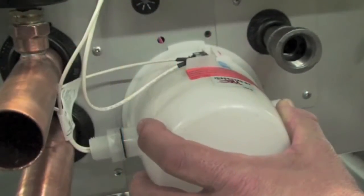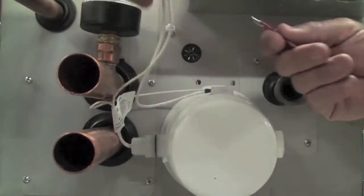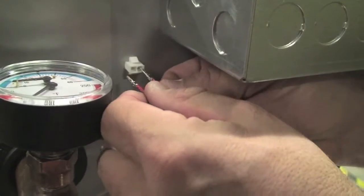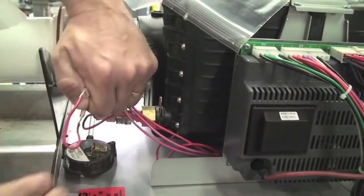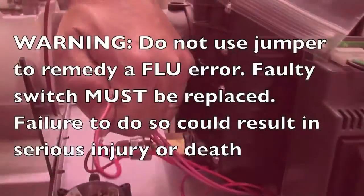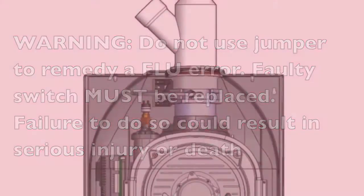Correct any problem found and resume operation. If the code is still present, then jump out the blocked vent switch and the condensate switch to determine what is causing the failure. Never leave the unit jumped out. Replace the part and resume operation.